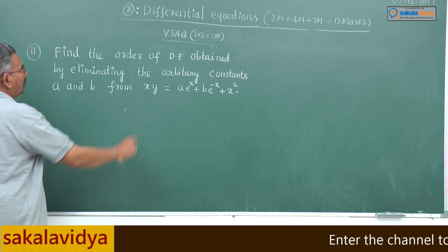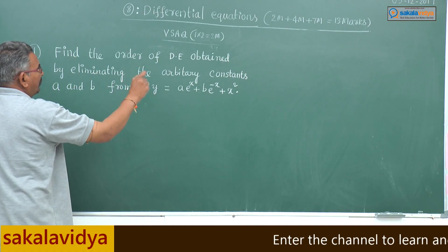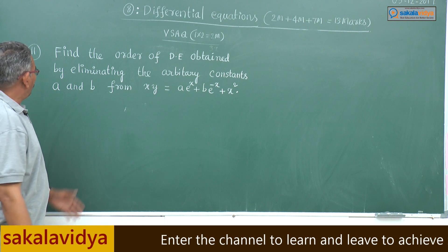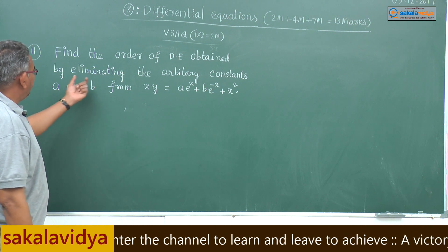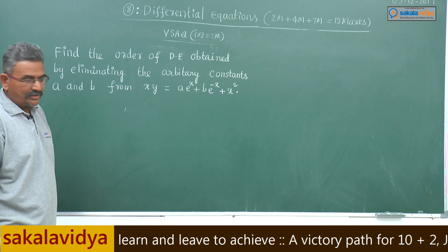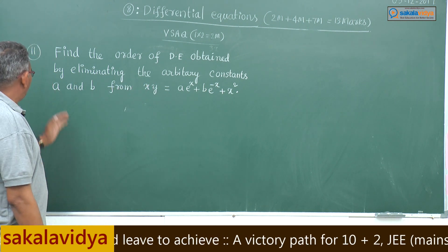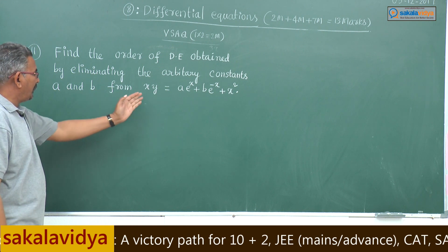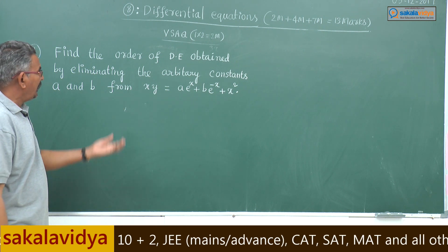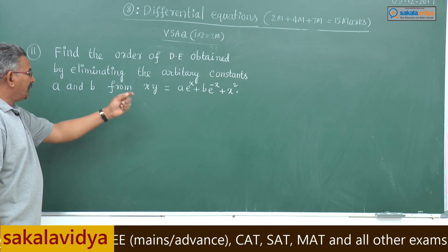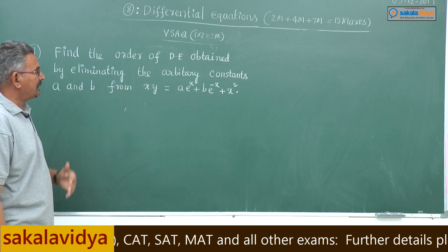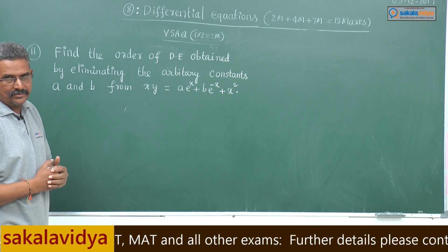Find the order of the differential equation obtained by eliminating the arbitrary constants a and b from xy = ae^x + be^(-x) + x².